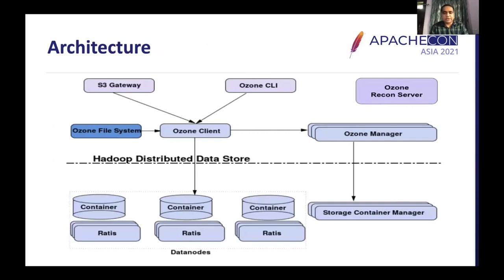Apache Ozone is built on a building block called Hadoop Distributed Data Store, generally known as HDDS. HDDS consists of a master service called Storage Container Manager which manages data nodes as well as block space. Unlike HDFS where a single block is a unit of replication, in Apache Ozone a container is the unit of replication. A container is essentially a collection of multiple blocks chained together. The default block size in HDFS is 128 MB, while the container size by default in Apache Ozone is 5 GB. Containers can be replicated among data nodes using a protocol called Apache Ratis.